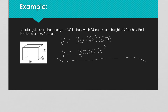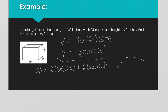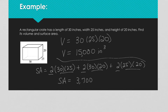The next thing is to find the surface area, and I've got two of each of the sides: 2 times 30 times 25, plus 2 times 30 times 20, plus 2 times 25 times 20. It doesn't matter what order you do those in, just as long as you have each of the sides multiplied by each other and you've got two of them. The surface area is equal to 3,700 square inches.